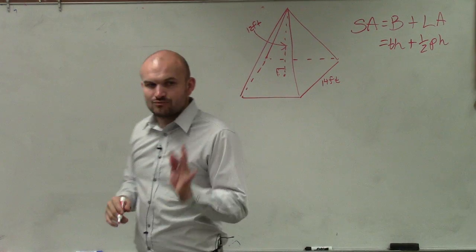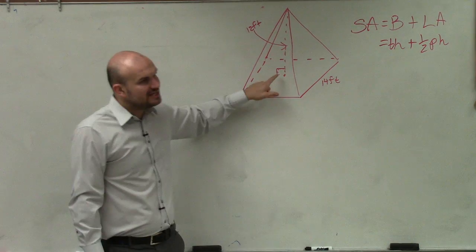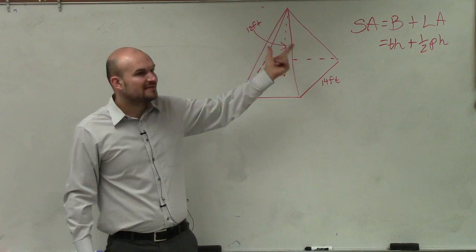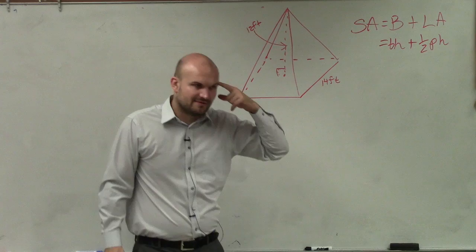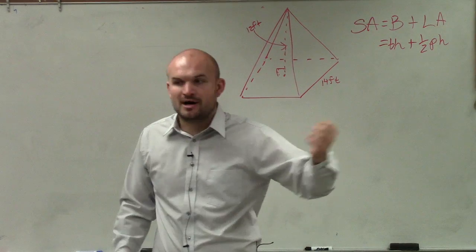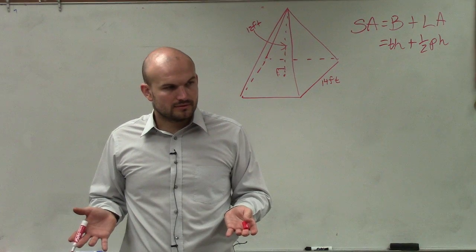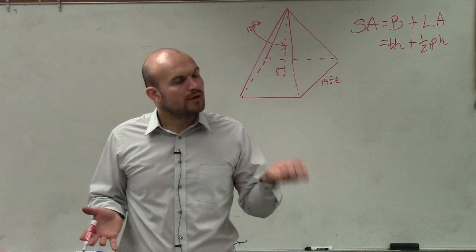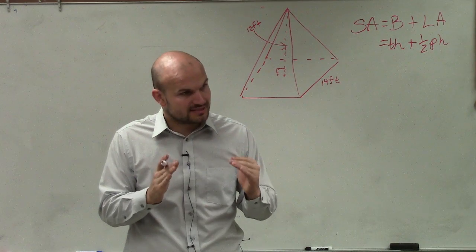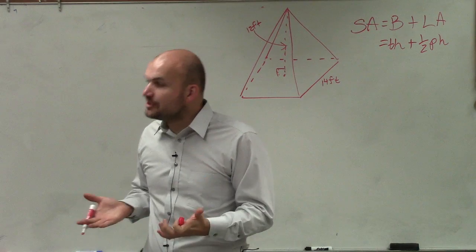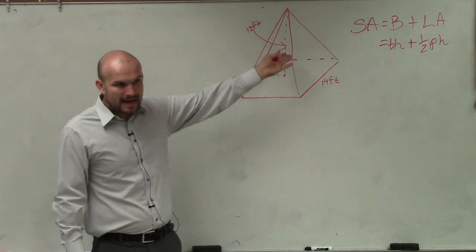Plus the lateral area is 1/2 perimeter times h. Now remember, h represents the slant height. What we have is the height from the bottom to the top. That's not the height we need when we're dealing with surface area. I'm going to give you guys another little nugget to think about. When we're talking about surface area and we have slants, we want to use the slant heights. When we're talking about volume, we always want to use the distance from the base to the top.